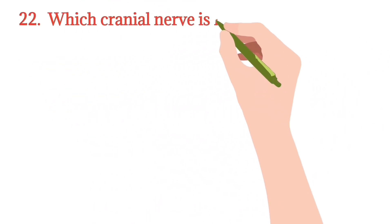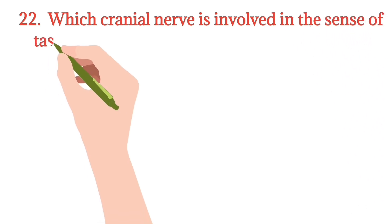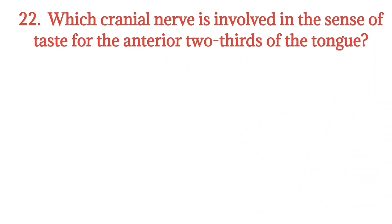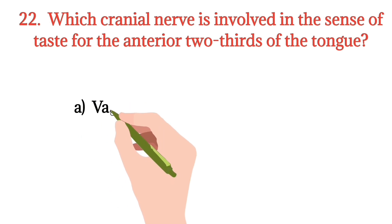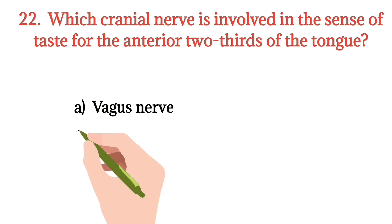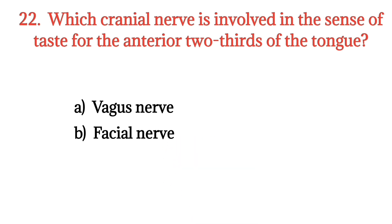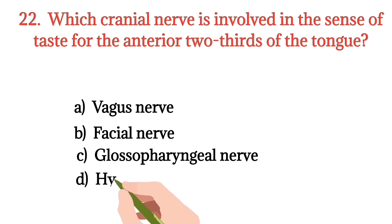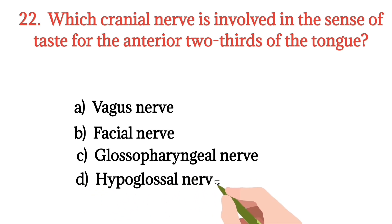MCQ number 22. Which cranial nerve is involved in the sense of taste for the anterior two-thirds of the tongue? Option A: Vagus nerve. Option B: Facial nerve. Option C: Glossopharyngeal nerve. Option D: Hypoglossal nerve. The right option is Option B.